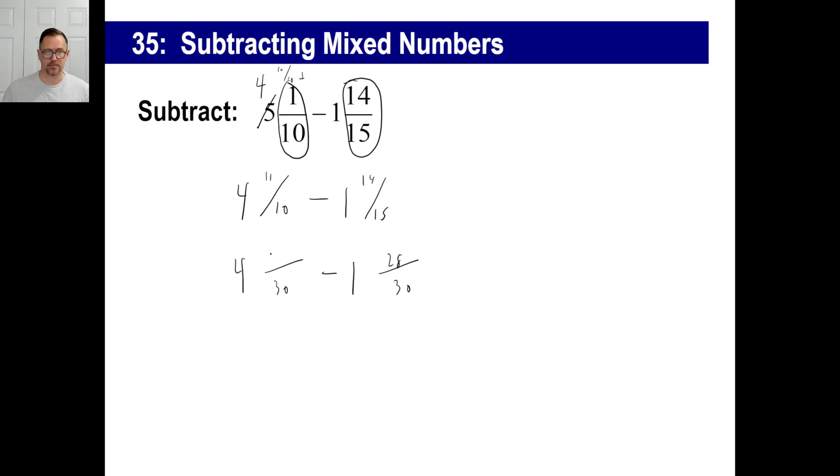So four minus one, that's the integers. Then thirty-three thirtieths minus twenty-eight thirtieths give you five thirtieths. And of course, we want to reduce the fraction as much as possible. Five into five goes once, and into thirty goes six times. And there you go.